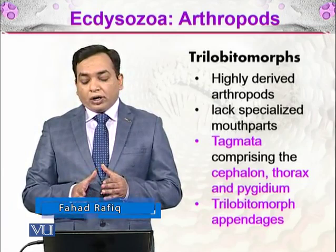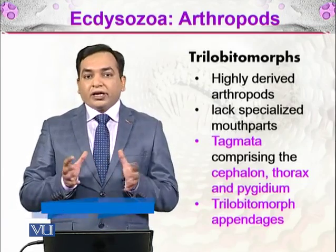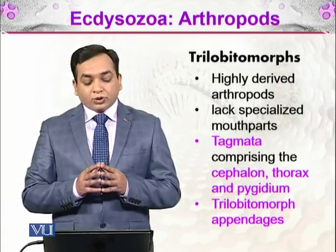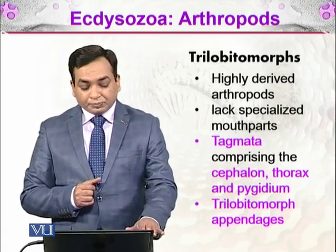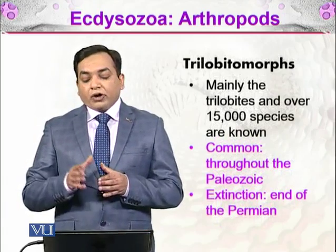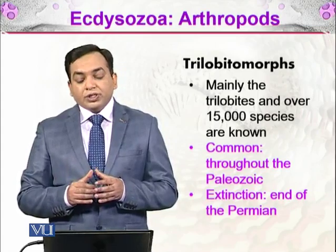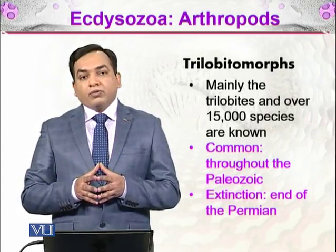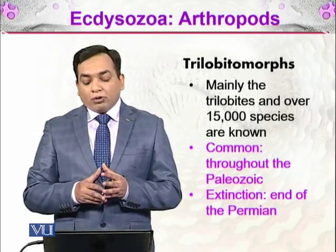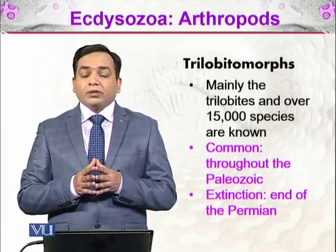Trilobytomorpha have leg-like appendages originating from their bodies that help these organisms move. Mainly the trilobites, over 15,000 species are known within these groups. They were common throughout the Paleozoic and went extinct at the end of the Permian.